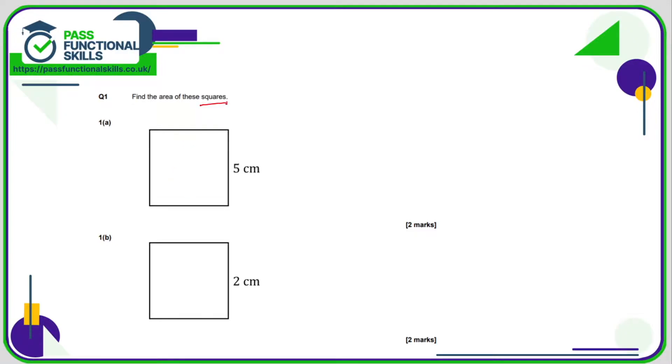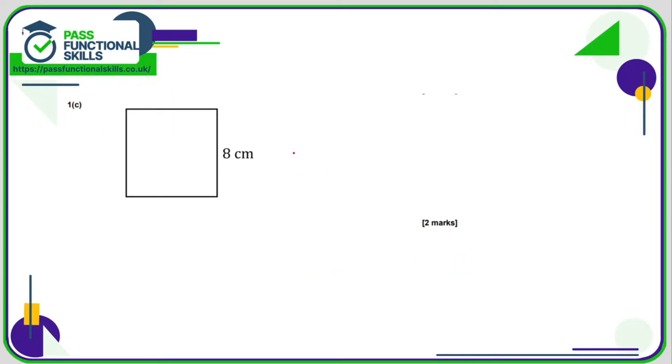So we've been told these are squares, so the side lengths are the same throughout. So the area is 5 times by 5, which is 25 square centimeters. For B, 2 times 2, 4 square centimeters. C, 8 times 8, so that's 64 square centimeters.